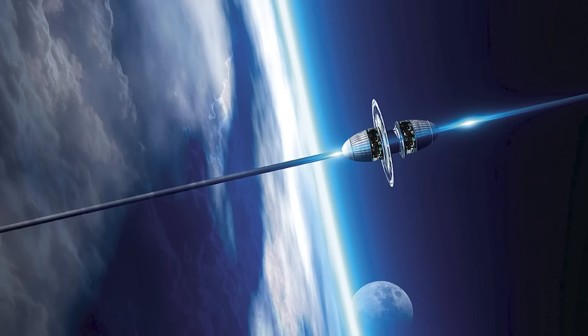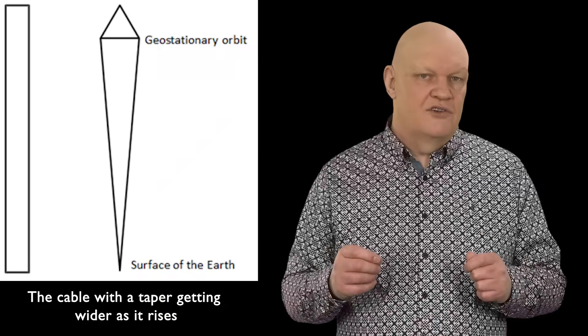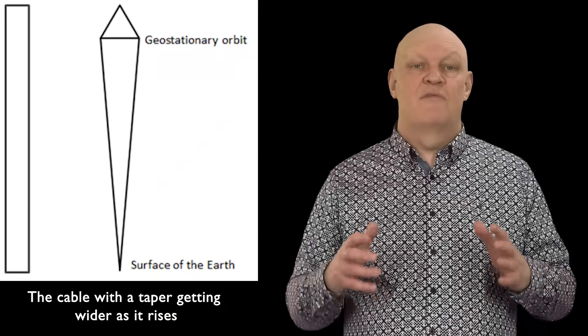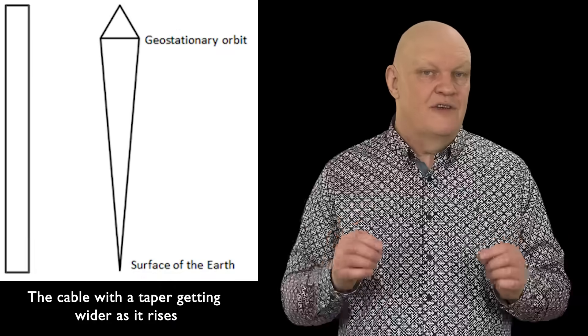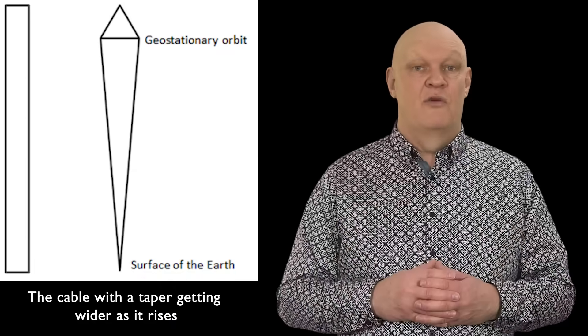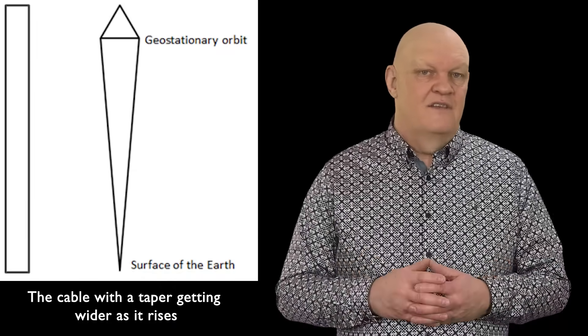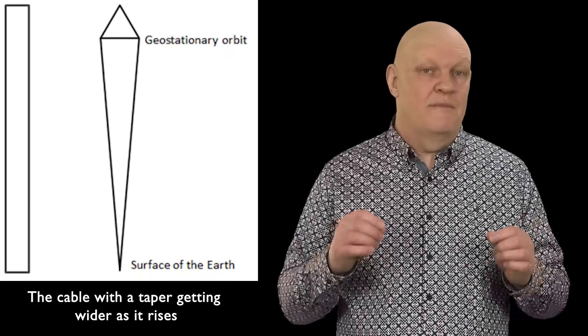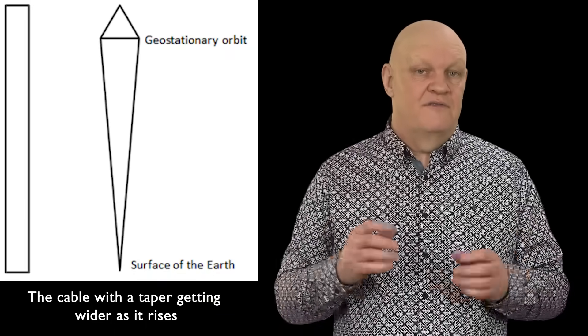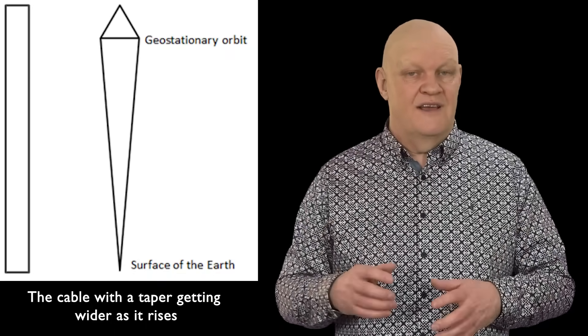This is of course assuming it was made of something like steel, which most elevator cables are constructed from. Artsutanov realized the issue and suggested that the cable would get progressively thicker as it went higher and higher up until it reached its maximum width where it would be attached to the satellite. This is so the stress along the cable would remain consistent at any point along its length. This varying thickness is called the taper.